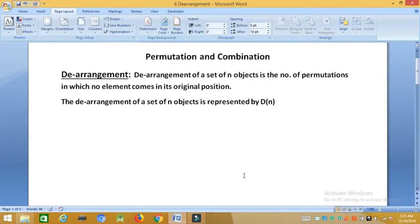As the name suggests, derangement of a set of n objects is the number of permutations in which no element comes in its original position. We have some objects and we like to displace their position from their original position. This displacement should be such that no object should come to its original position. The derangement of a set of n objects is represented by dn.